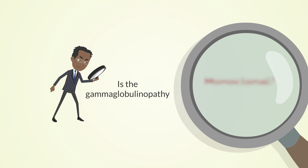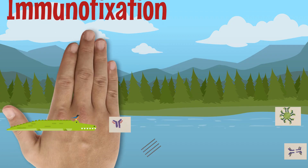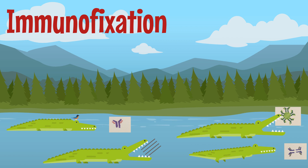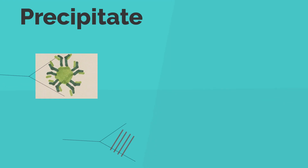That brings us to our next question: is the gamma globulinopathy monoclonal? In order to quantify the amount of each abnormal immunoglobulin family produced, we would do a test called immunofixation. To understand immunofixation, imagine a crocodile-infested lake where each crocodile is a picky eater — one is after light chains, one is after IgM, and one is after IgG. In immunofixation, a test solution containing specific antibodies against each type of immunoglobulin is introduced. These antibodies form a complex with the specific immunoglobulin, giving a measure of how much of each is present.